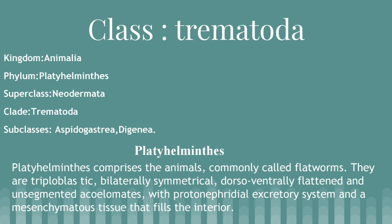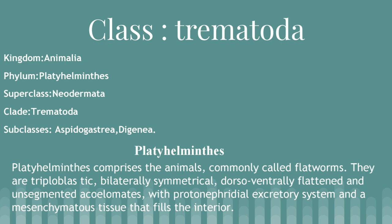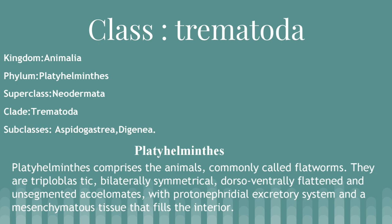Platyhelminthes comprises the animals commonly called flatworms. They are triploblastic, bilaterally symmetrical, dorsoventrally flattened and unsegmented acoelomates with a protonephridial excretory system and a mesenchymatous tissue that fills the interior.